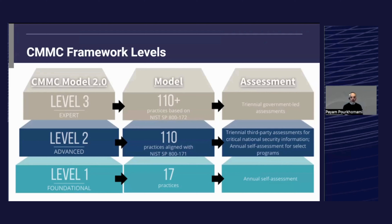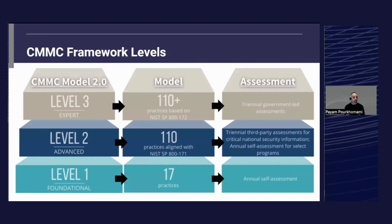In terms of the CMMC 2.0 framework itself, there are now three streamlined levels. CMMC Level 1 has 17 practices. It's intended for contractors who only hold federal contract information, or FCI, and validates 17 requirements derived from FAR 52.204-21. FCI is defined as information not intended for public release that is provided by or generated for the government under a contract to develop or deliver a product or service. The key change to CMMC Level 1 is that it was moved to a self-assessment model with the release of CMMC 2.0, and this remains unchanged in the proposed final rule.